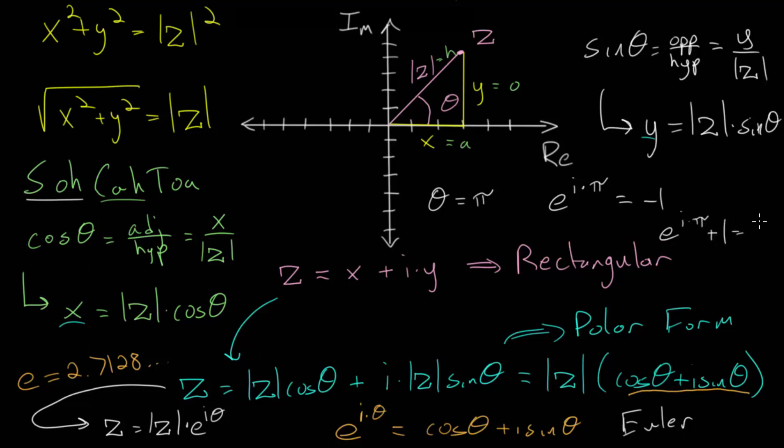Which essentially relates arguably the five most important constants in mathematics in this nice, simple equation. And this equation, Euler's identity, was actually voted by professional mathematicians to be the most beautiful equation in all of mathematics.